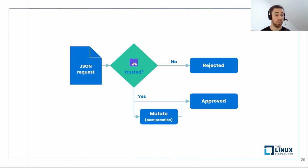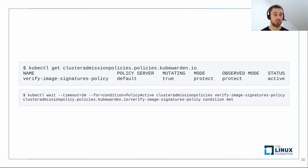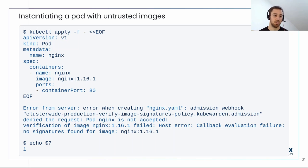To apply the policy, we just do kubectl apply of the cluster admission policy we've seen. It takes about a minute, and then we can see in kubectl get cluster admission policies that the status is active. With that, the policy is enforcing and protecting. You could also use the condition of the custom resource — waiting for condition policy-active — and once it's done, you know it's enforcing. Let's see how that looks. Let's try to instantiate a pod with an untrusted image — in this case, an nginx pod that is not signed. We try to instantiate it and it doesn't work. We see: 'pod nginx is not accepted — verification of image nginx failed: no signatures found for image.' Perfect, that's what we wanted.